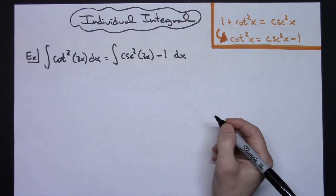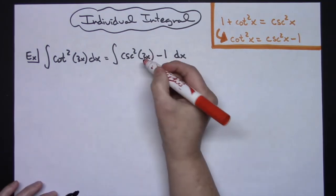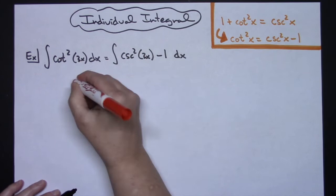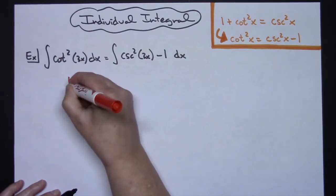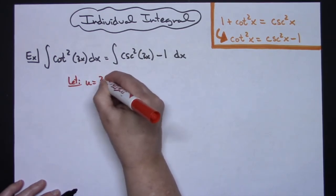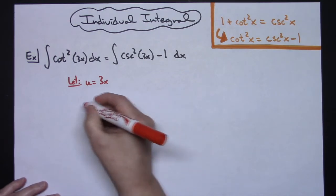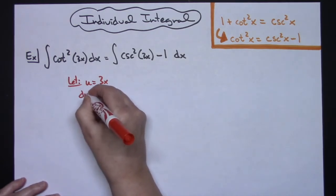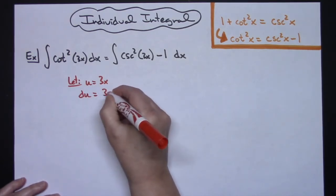Now from here I'm going to do my basic u substitution. I'm going to let this inside portion of this function be my u. So I'm going to let u equal 3x. From here I'm going to take the derivative of both sides. We'll have a du is equal to a 3 dx.